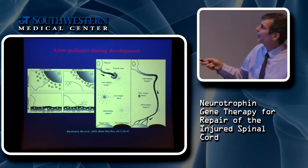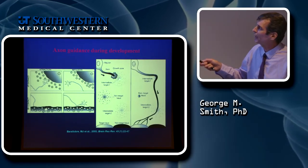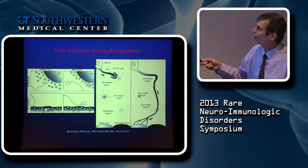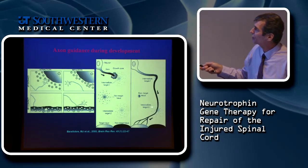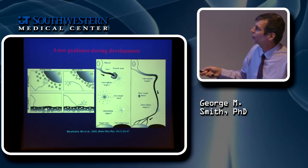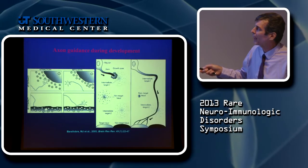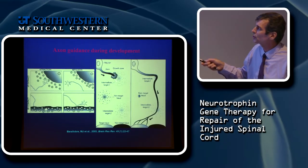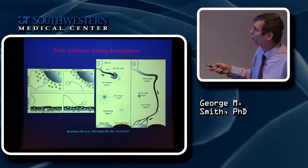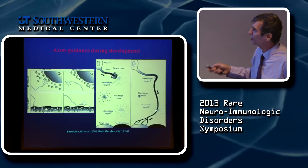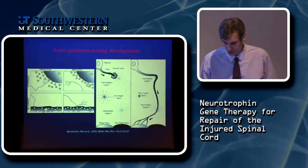The neuron looks at intermediate targets: one intermediate target produces a chemotrophic factor attracting the neuron, while a non-target tissue produces a repulsive molecule. So the growing neuron proceeds from intermediate target one, avoids the non-target, goes to intermediate target two, and finally reaches its target domain where it creates a functional circuit.